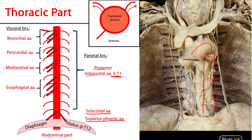The visceral branches of the thoracic aorta are more anterolateral and include bronchial arteries, pericardial arteries, mediastinal arteries, and esophageal arteries. The bronchial arteries supply the bronchi and also the superior portion of the esophagus with blood. The pericardial arteries supply the pericardium. The mediastinal arteries supply elements of the mediastinum, especially lymph nodes. The esophageal arteries supply the lower esophagus with blood.